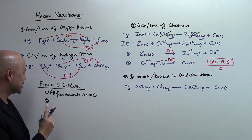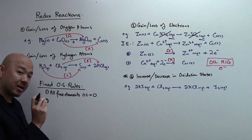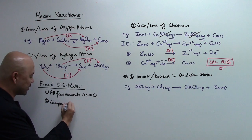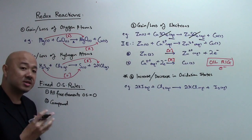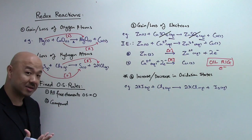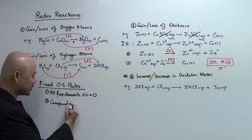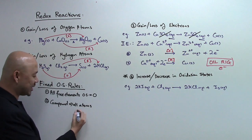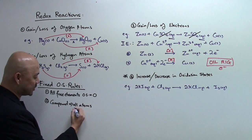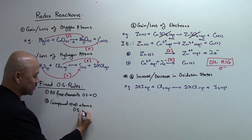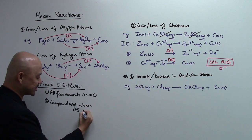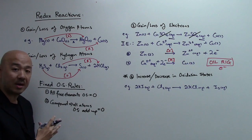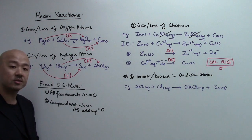Rule number two: in a compound, the compound has zero charge — it is a neutral species. So when you add up the oxidation states of all the atoms in a compound, they will equal zero, following the charge of the compound.